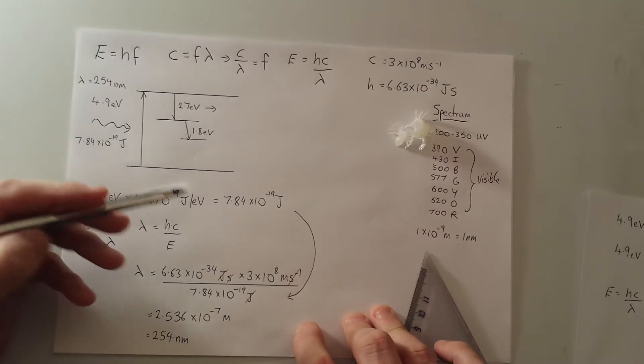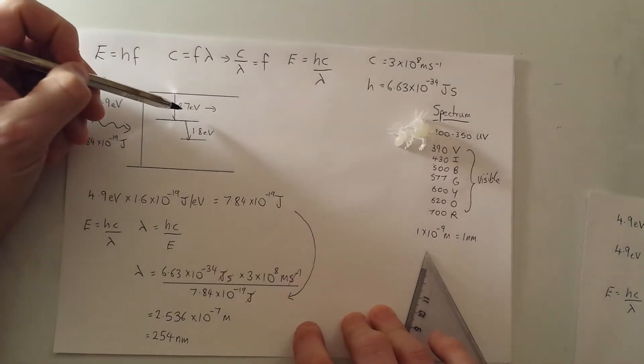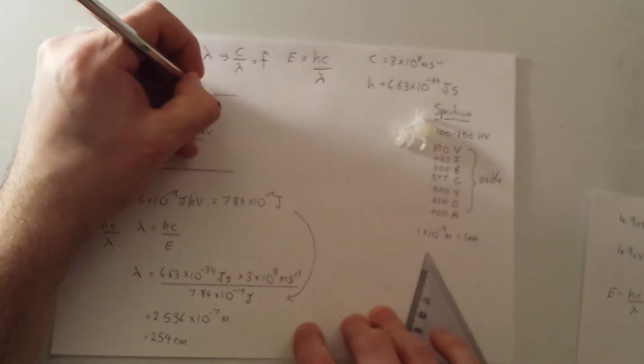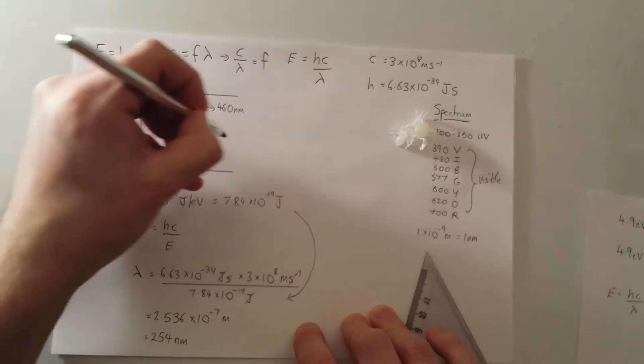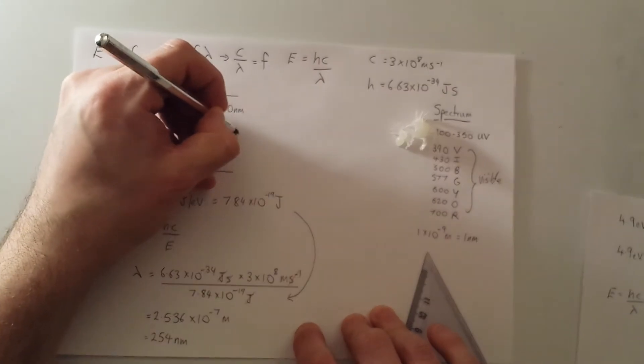Effectively, if we had 2.7 eV, we would be looking at about 460 nanometers. And here we'd be looking at 688 nanometers.